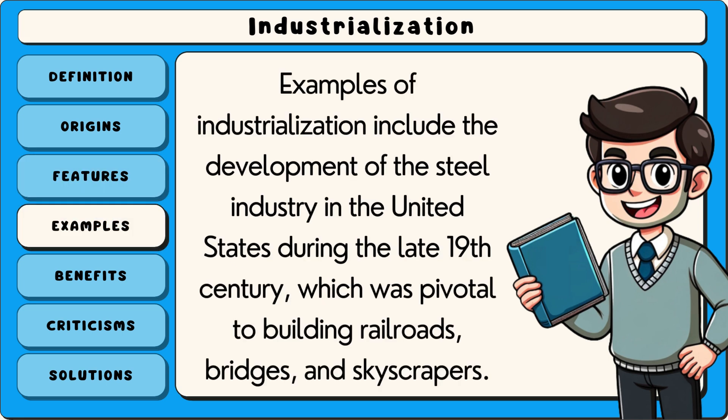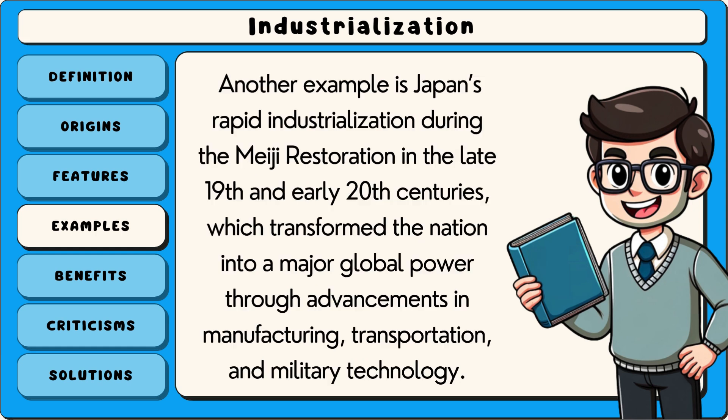Examples of industrialisation include the development of the steel industry in the United States during the late 19th century, which was pivotal to building railroads, bridges and skyscrapers.